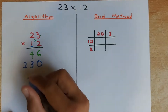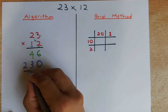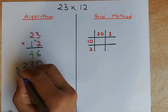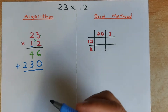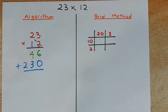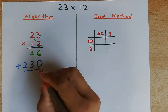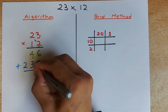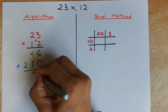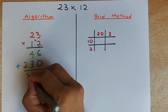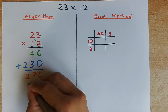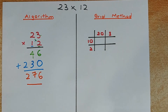Then what you are going to do, you are going to draw a line and add the numbers. So 6 plus 0 is 6. And then 4 plus 3 is going to be 7. And 0 plus 2 is going to be 2. And the answer is 276.